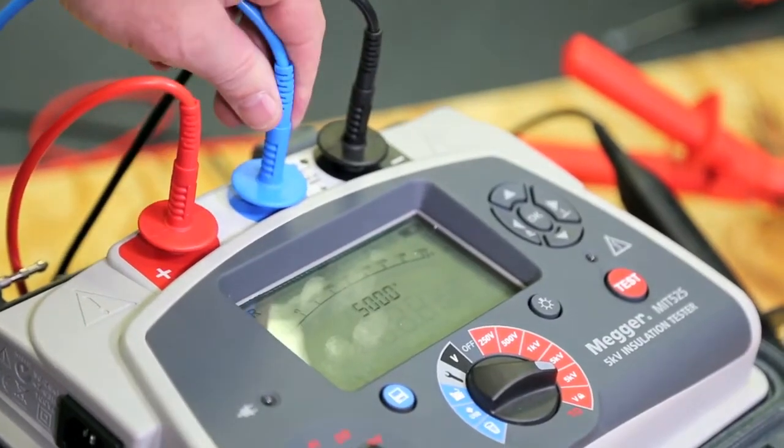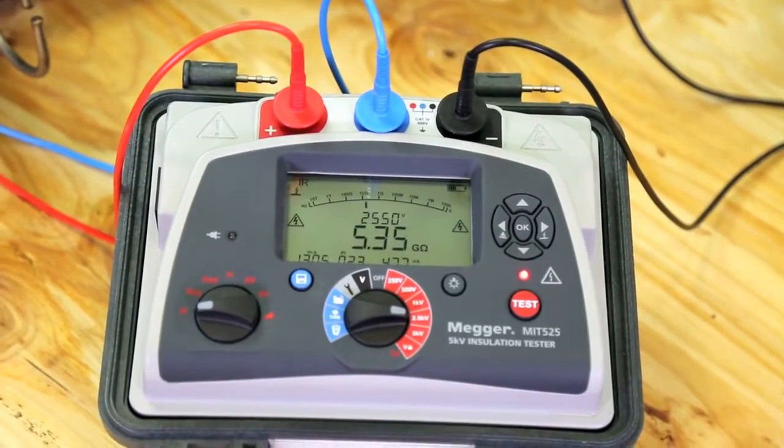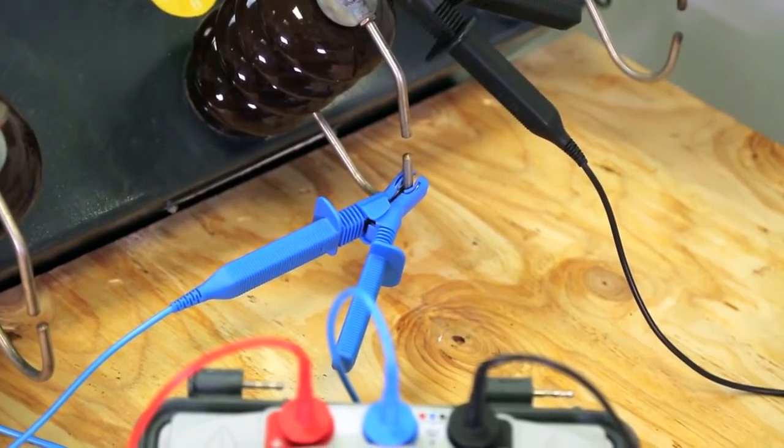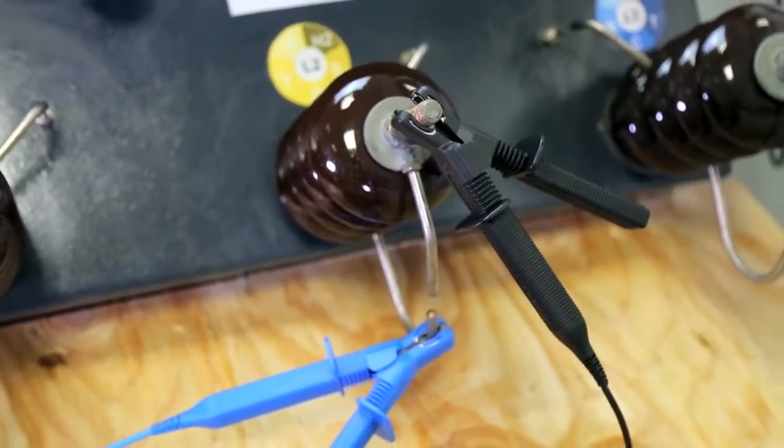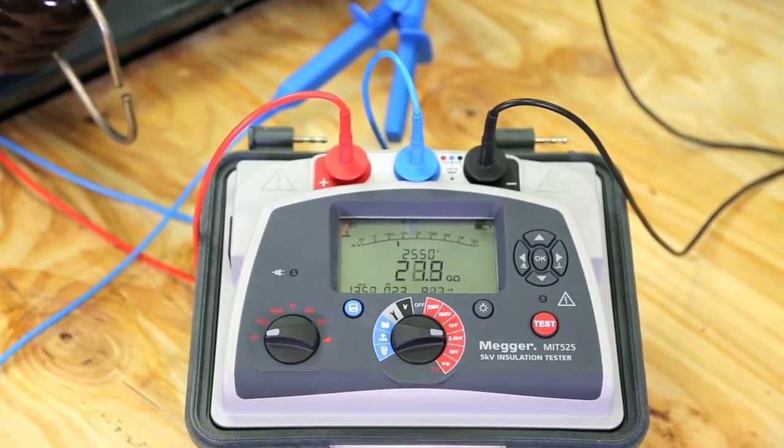The guard terminal ensures you measure the insulation that you want to measure. It measures and discounts any surface leakage current. It is key to the accuracy of the insulation test. That's why Megger's guard terminal performance is specified and offers unmatched accuracy.